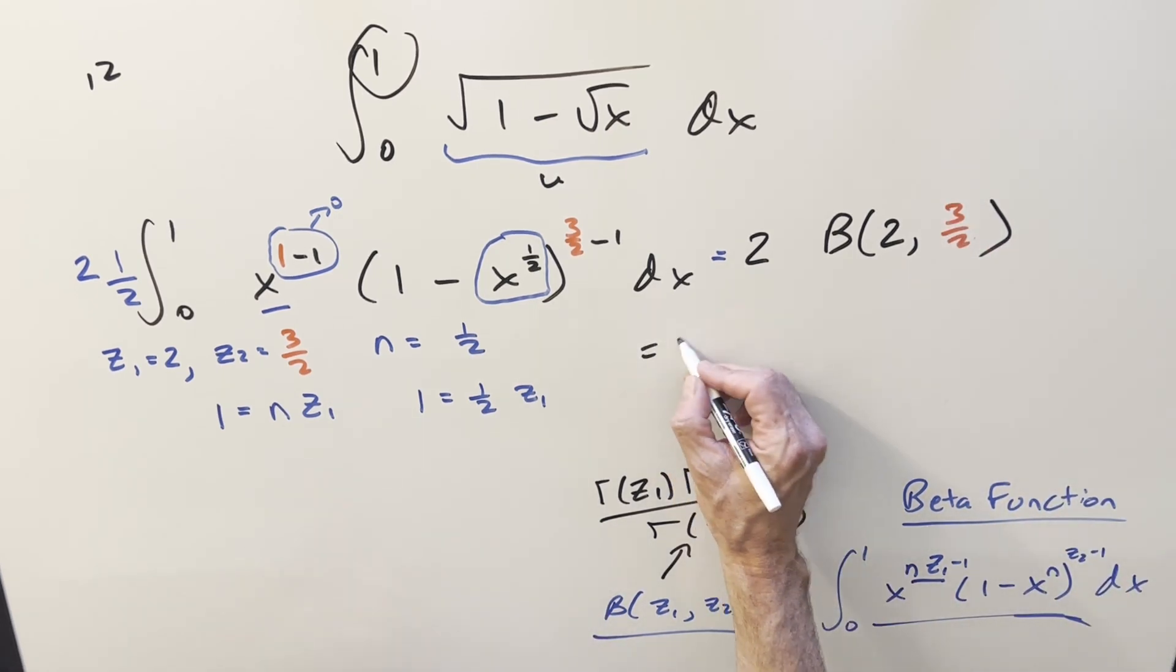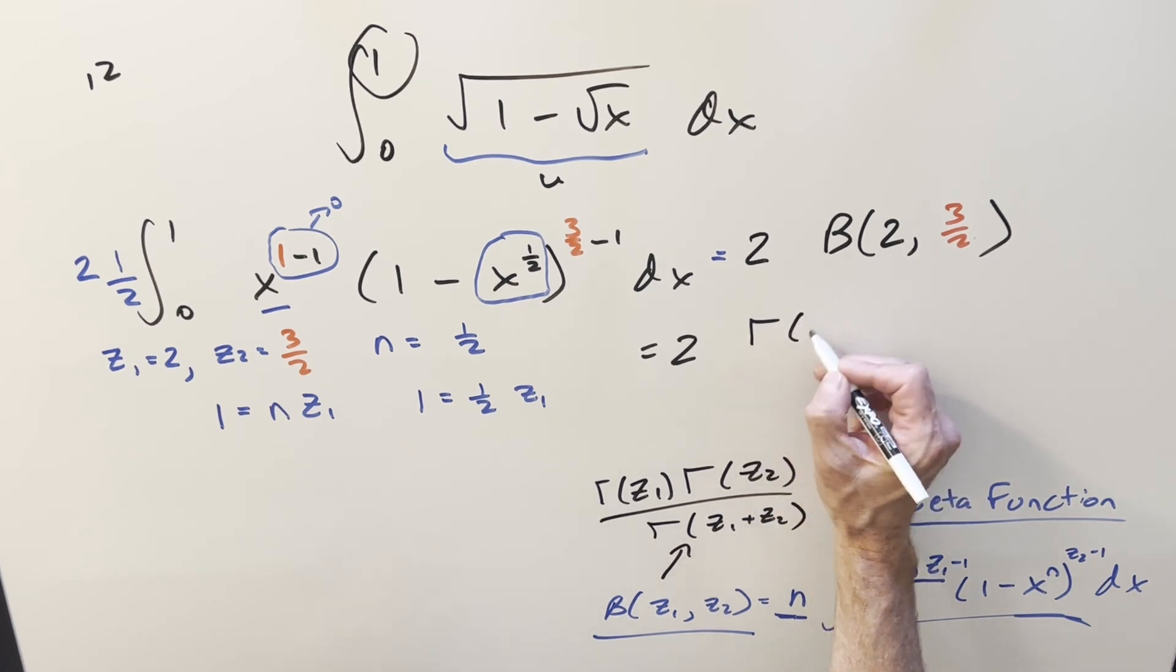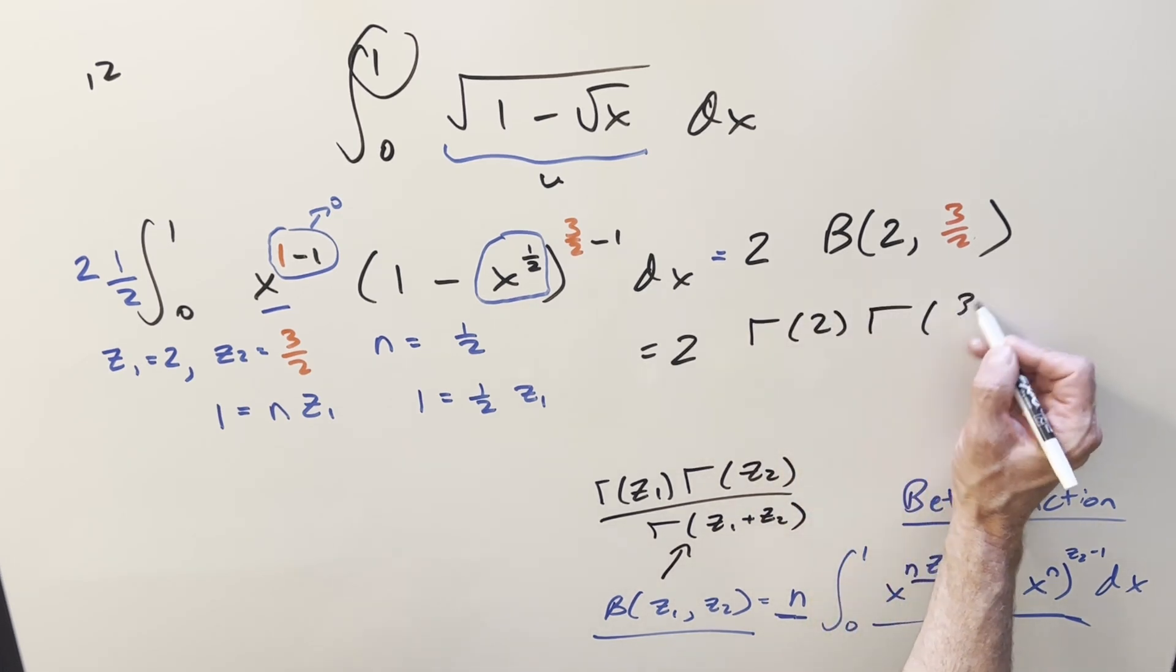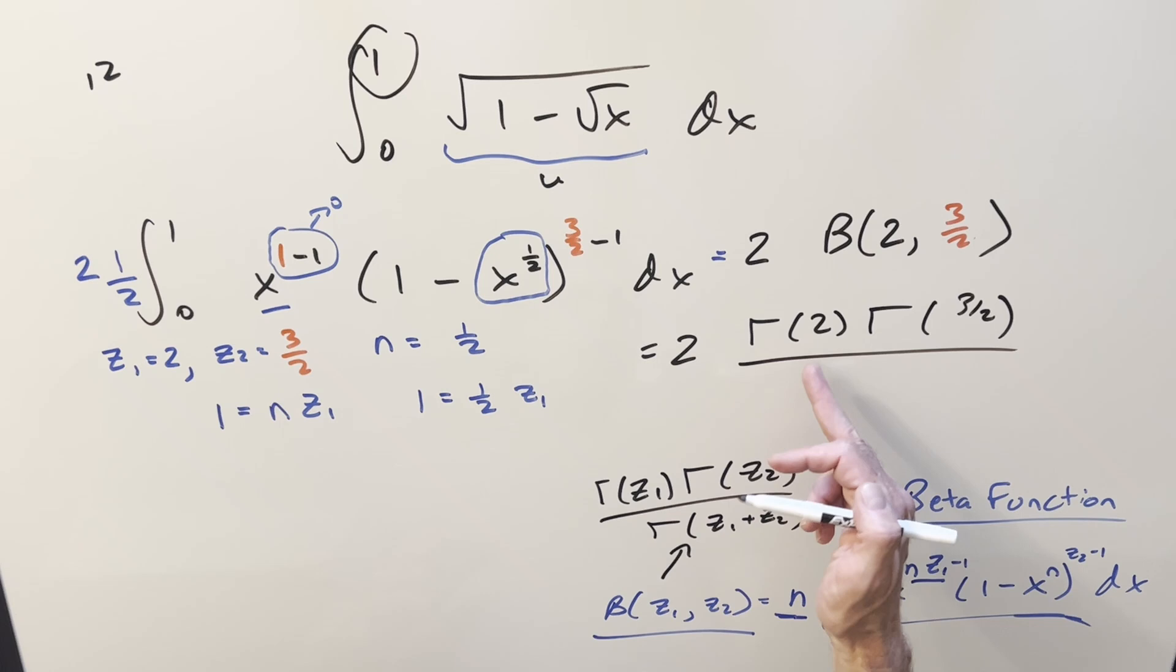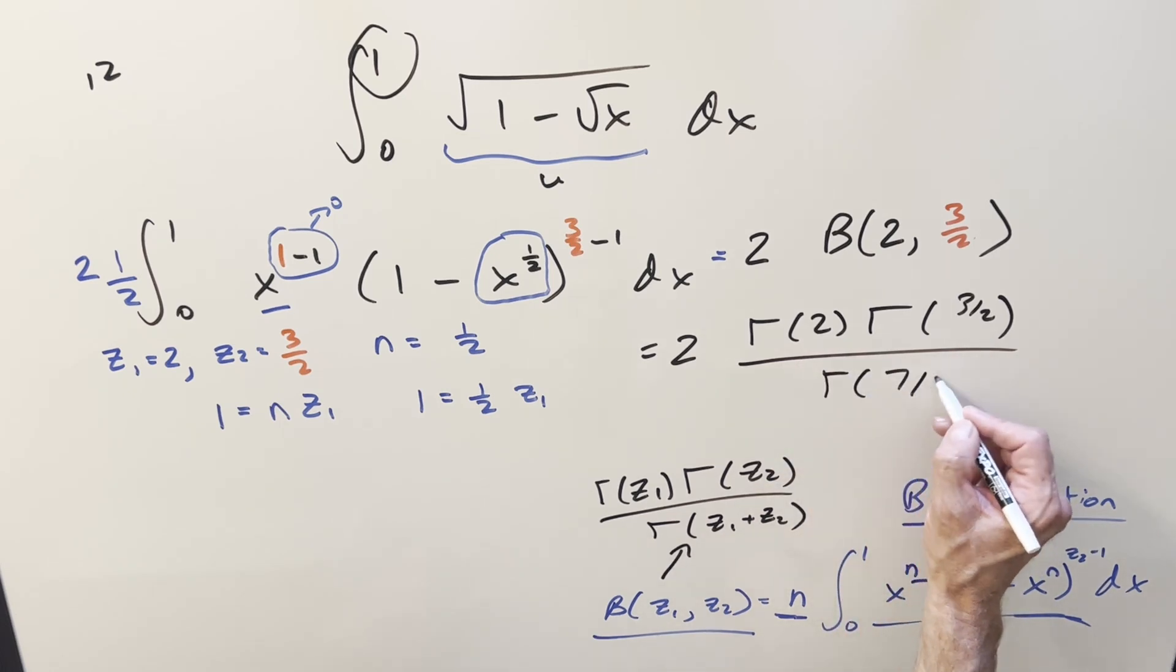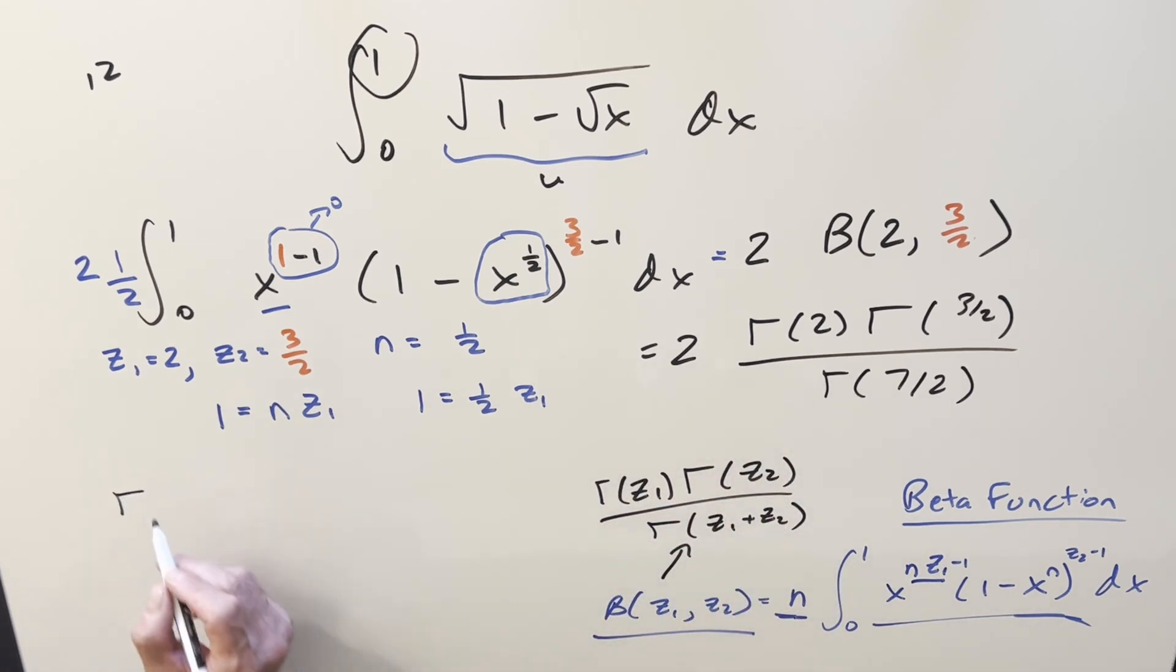So now using this, we go ahead and simplify. We have the 2 out front. Then we're going to have gamma of the first value, which is 2, times gamma of the second value over the sum of them. You put those together, we have gamma of 7 over 2. Now to simplify this, we can use a couple formulas. First of all, for gamma of n plus 1, putting that into factorials, that's the same thing as n factorial. So then for gamma of 2, that's going to be 1 factorial, which is just 1. So basically, we can get rid of that right there.